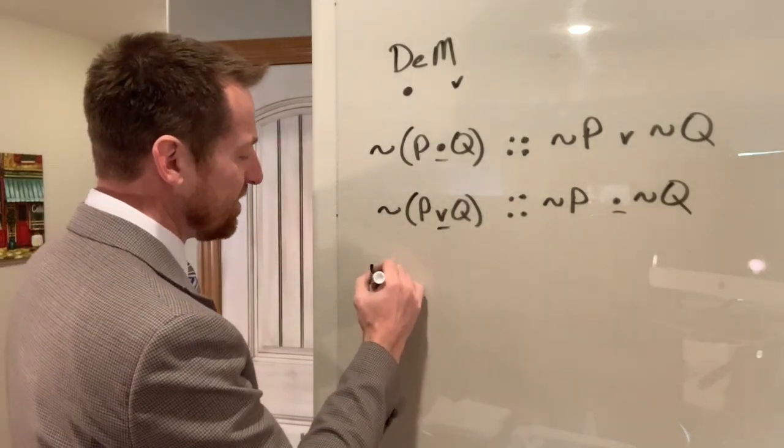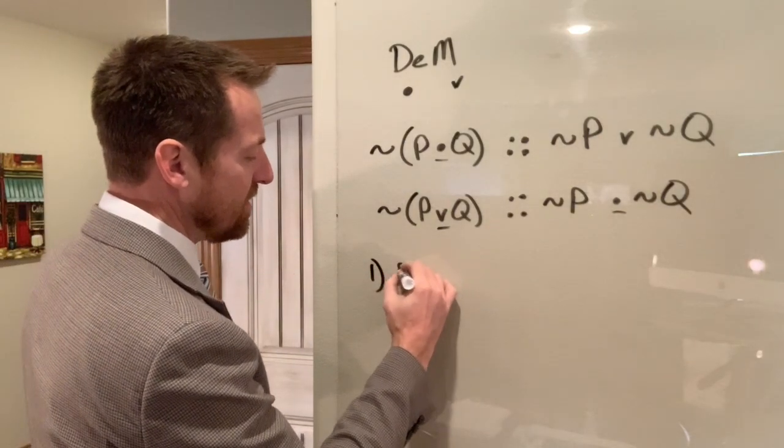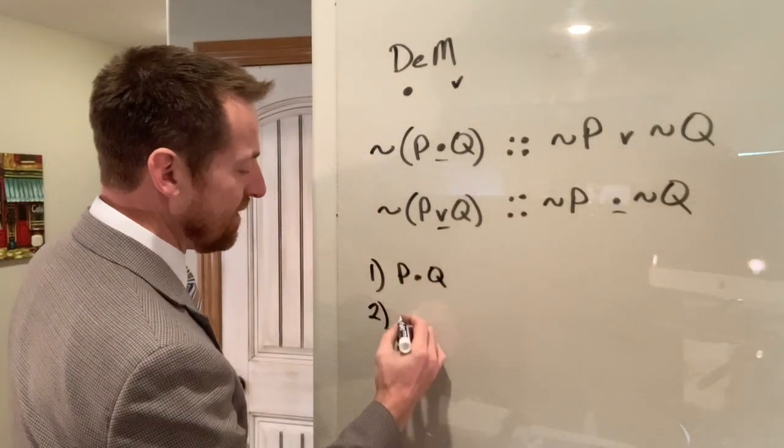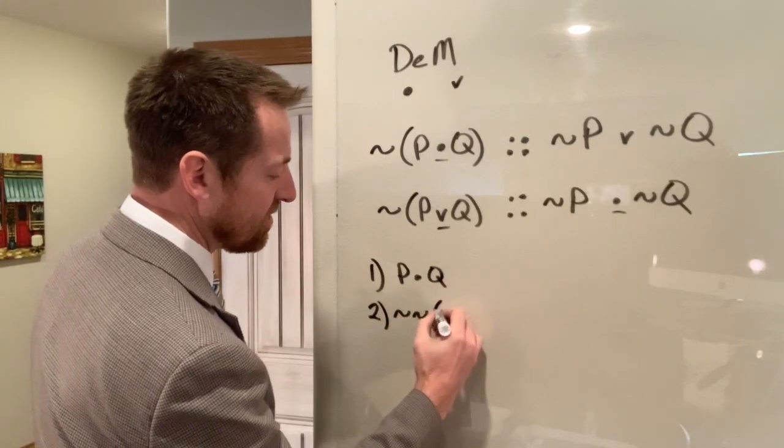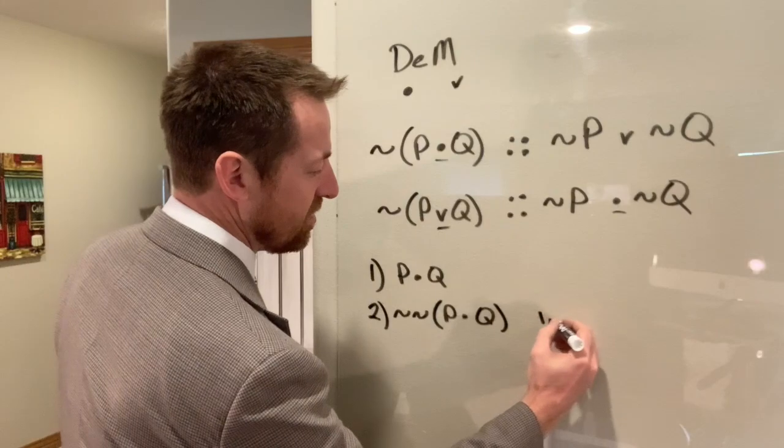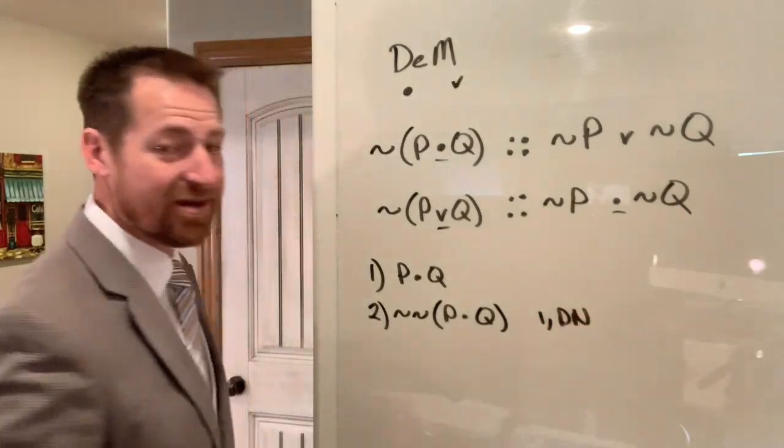So you might have, say, in the line of a proof, P and Q. One option you could have is to then on the next step, say it's not not P and Q from line one, double negation.